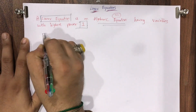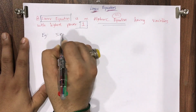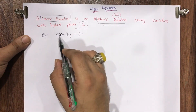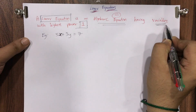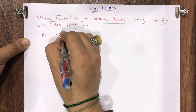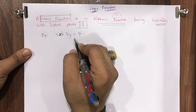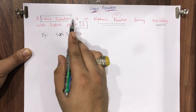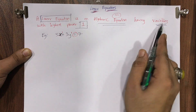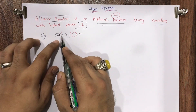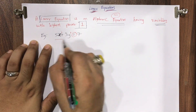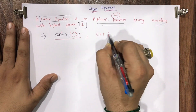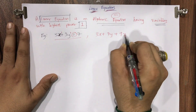So any expression which has an equal to sign and variables with the highest power as one is called a linear equation. For example: 5x + 3y = 7. Here we have two variables, x and y. The power of x is 1 and the power of y is 1 — when nothing is mentioned, by default it's 1. Since there is an equal to sign, it's a linear equation.